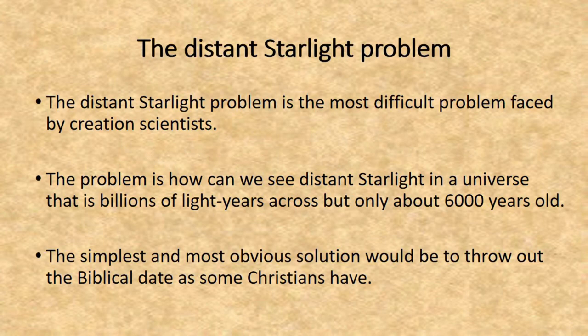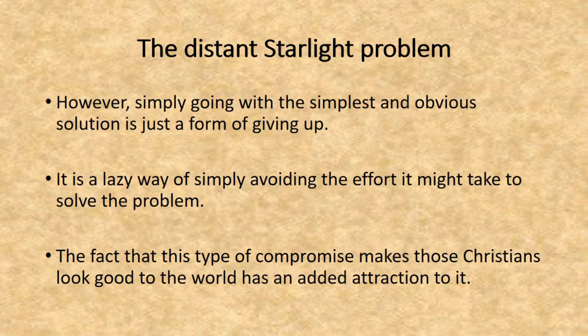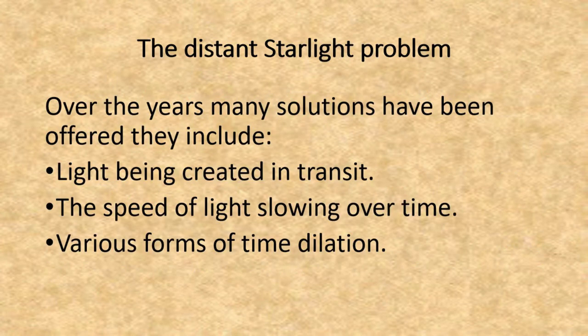The distant starlight problem is the most difficult problem faced by creation scientists. The problem is: how can we see distant starlight in a universe that is billions of light years across but only 6,000 years old? The simplest and most obvious solution would be to throw out the biblical date, as some Christians have. However, simply going with that solution is just a form of giving up — a lazy way of avoiding the effort it might take to solve the problem. Over the years, many solutions have been offered, including light being created in transit, the speed of light slowing over time, and various forms of time dilation.